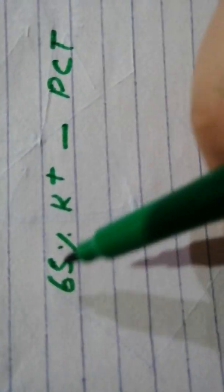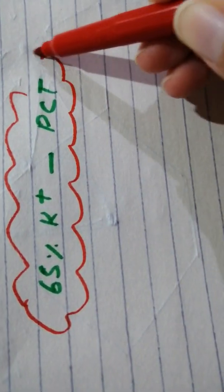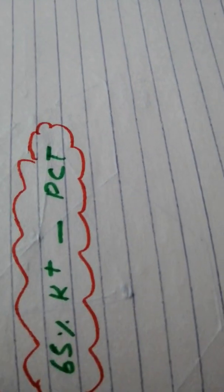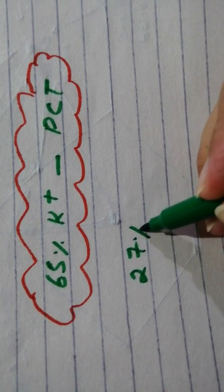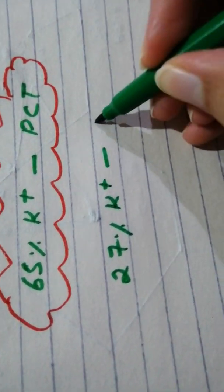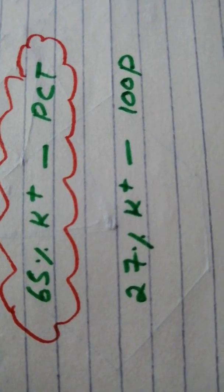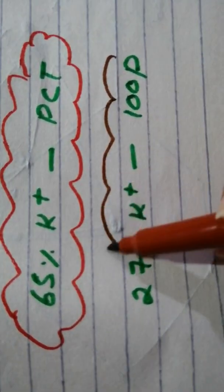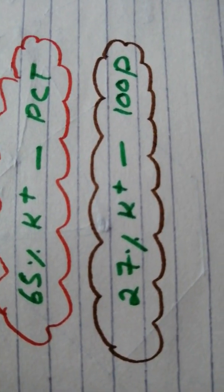Then 27% of potassium is reabsorbed by the loop of Henle because of the co-transport mechanism. Again, it is more or less fixed. So this makes about 92% total.